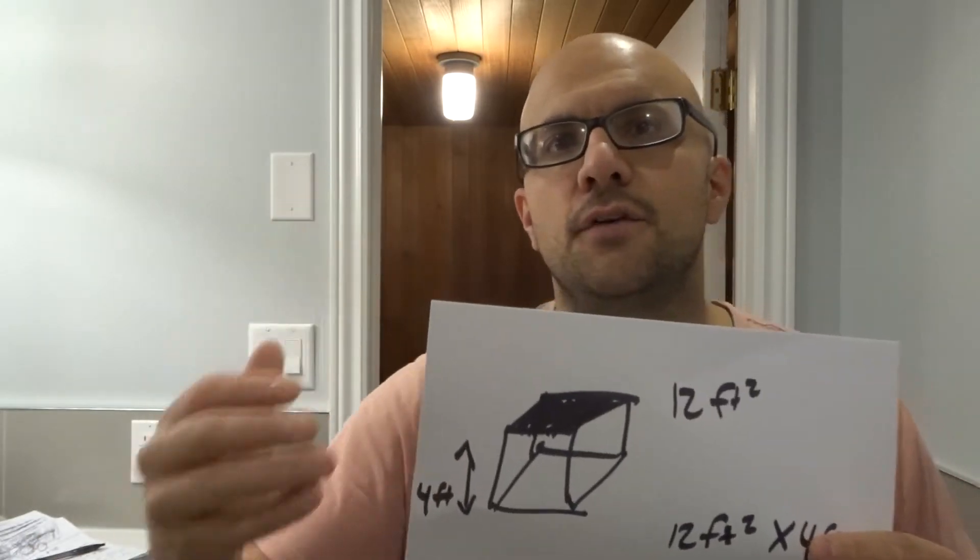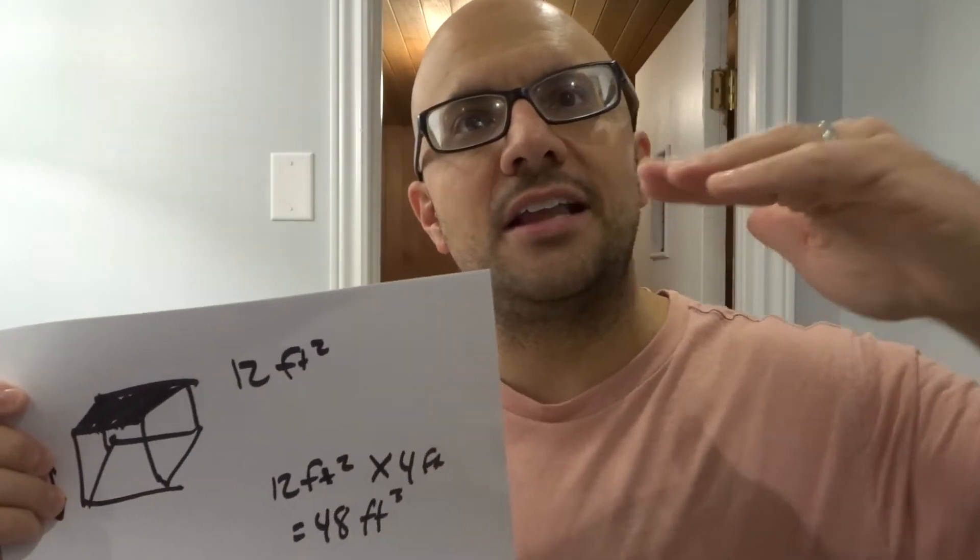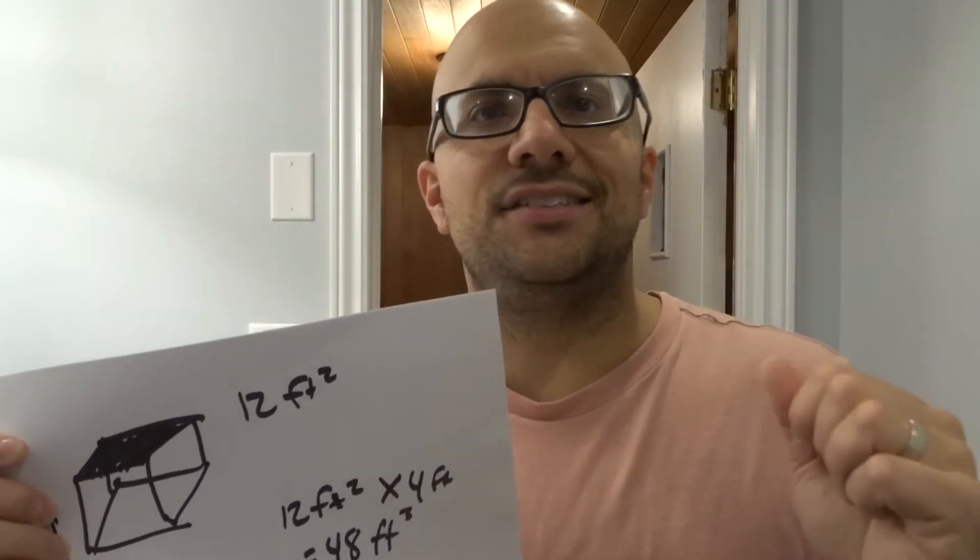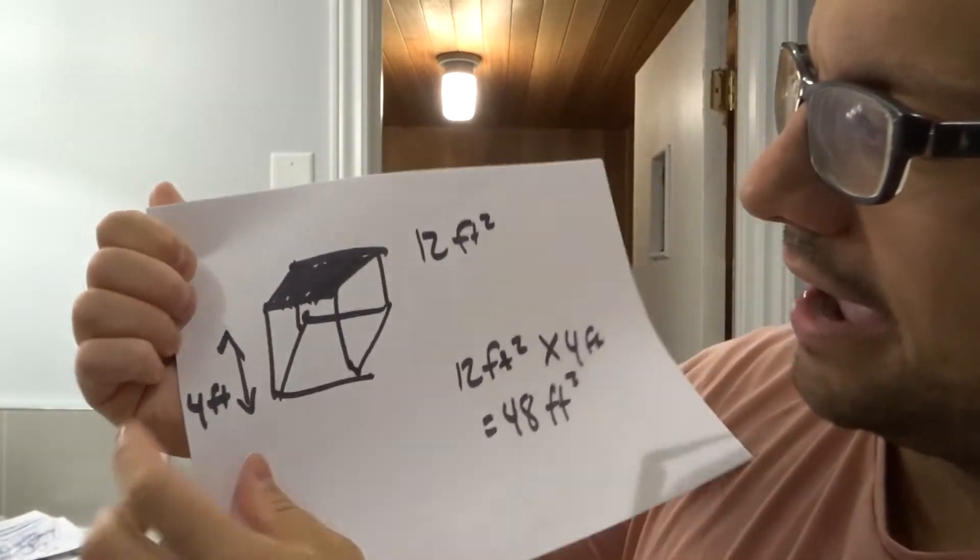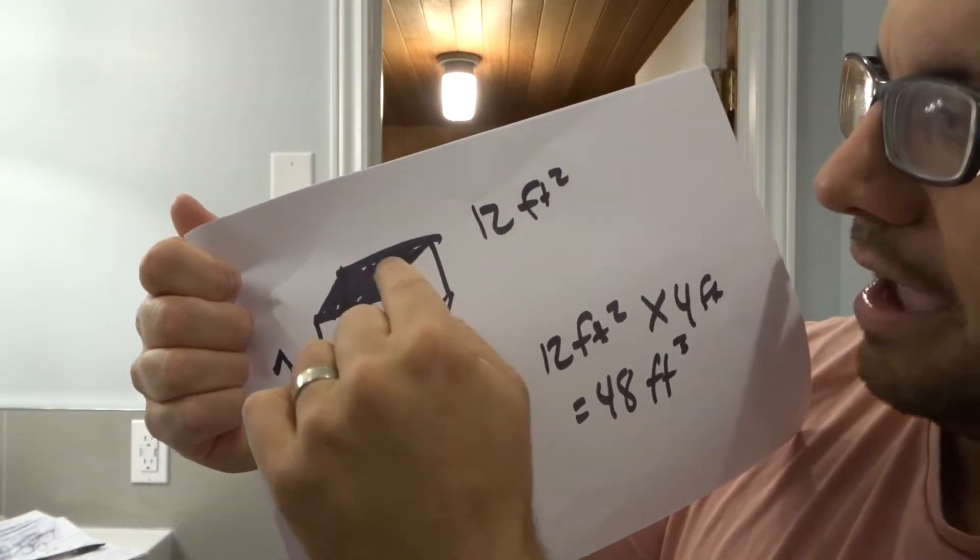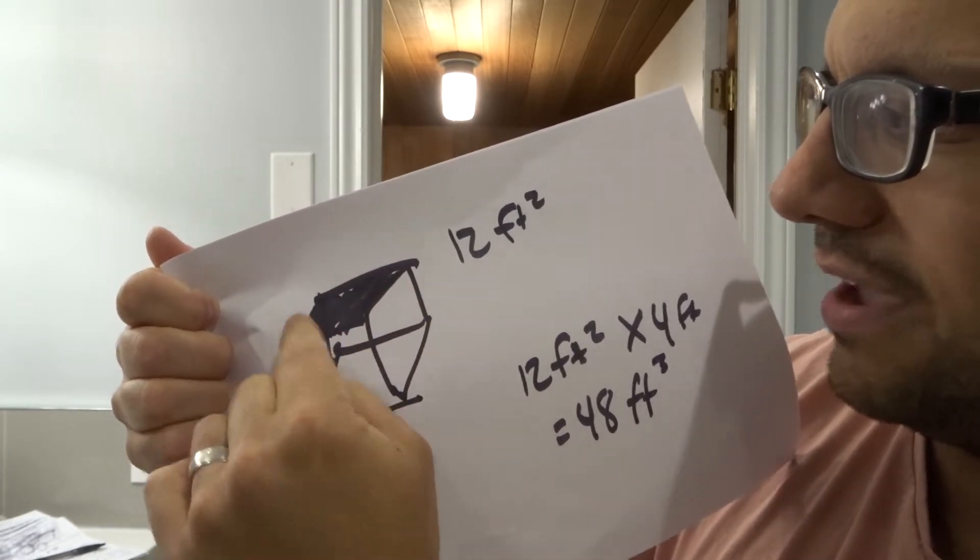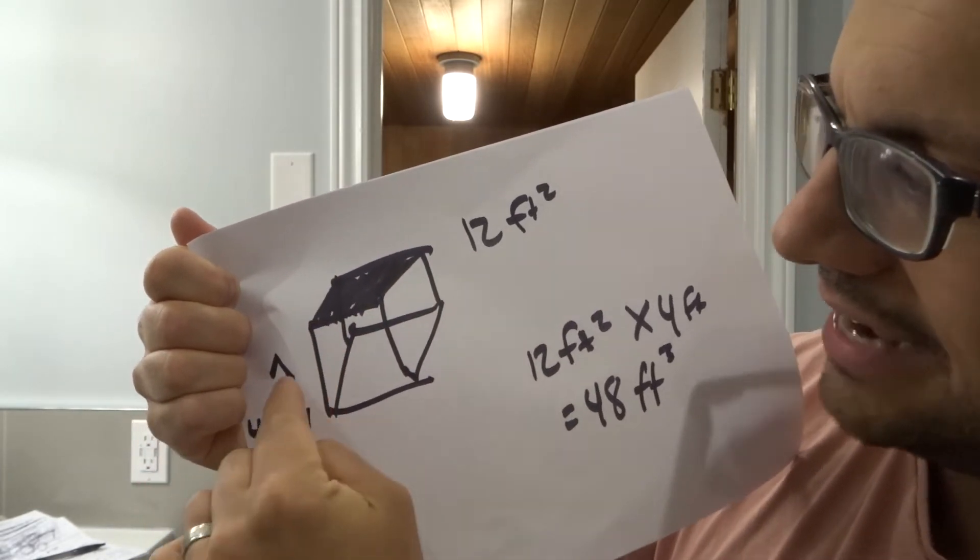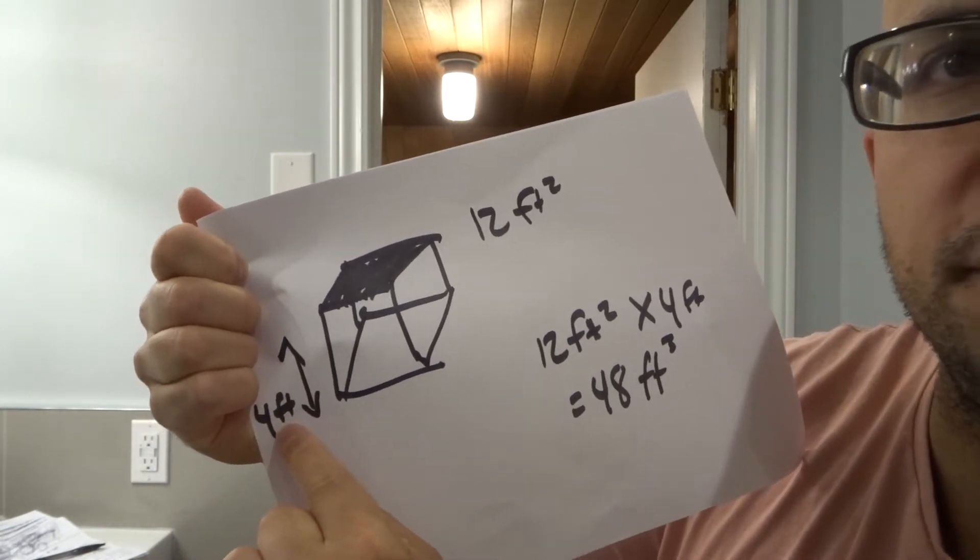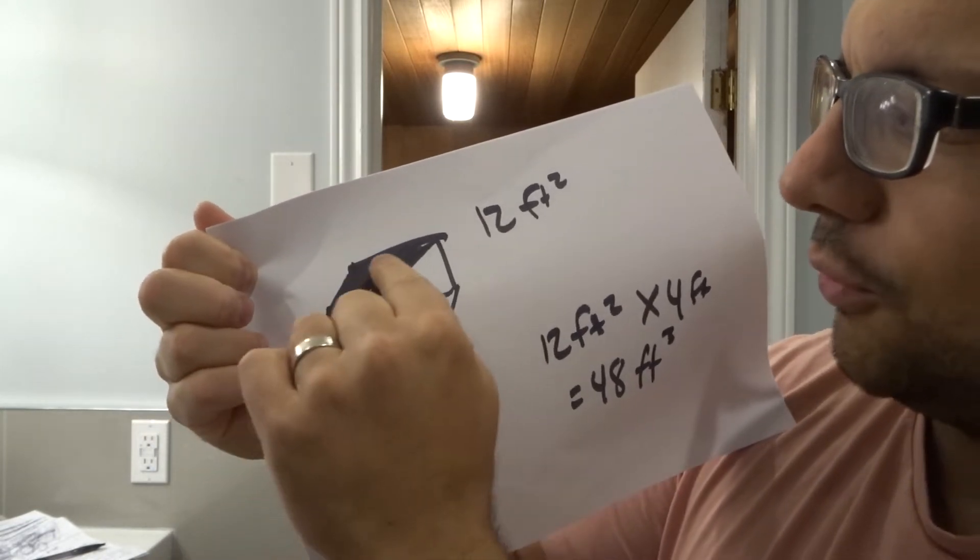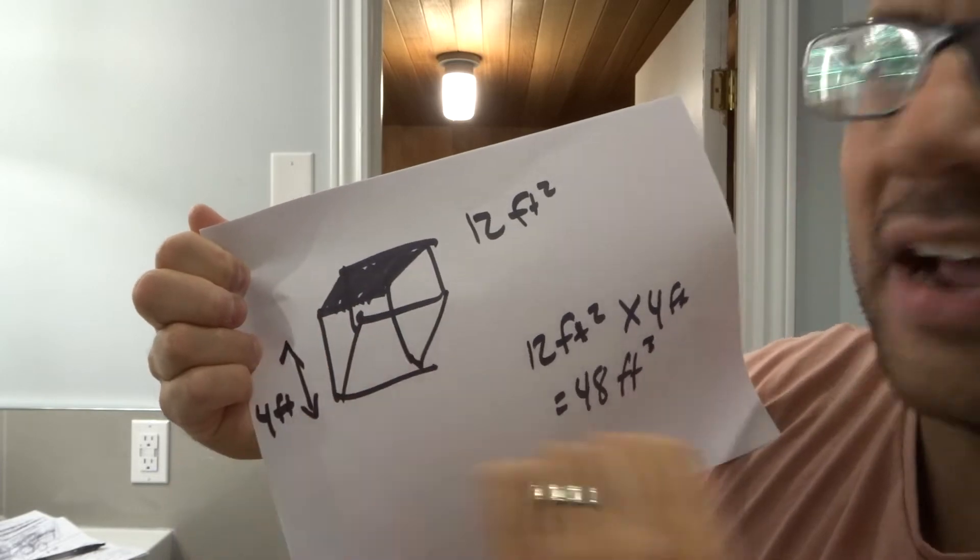Now let's say you wanted to convert it to cubic feet. You need to find out how many feet is the other side. This is 12 square feet, which encompasses this measurement and this measurement right here - the length and the width. We need to know the height. The height is 4 feet, as you can see over there. So this is 12 square feet, and the height is 4 feet.